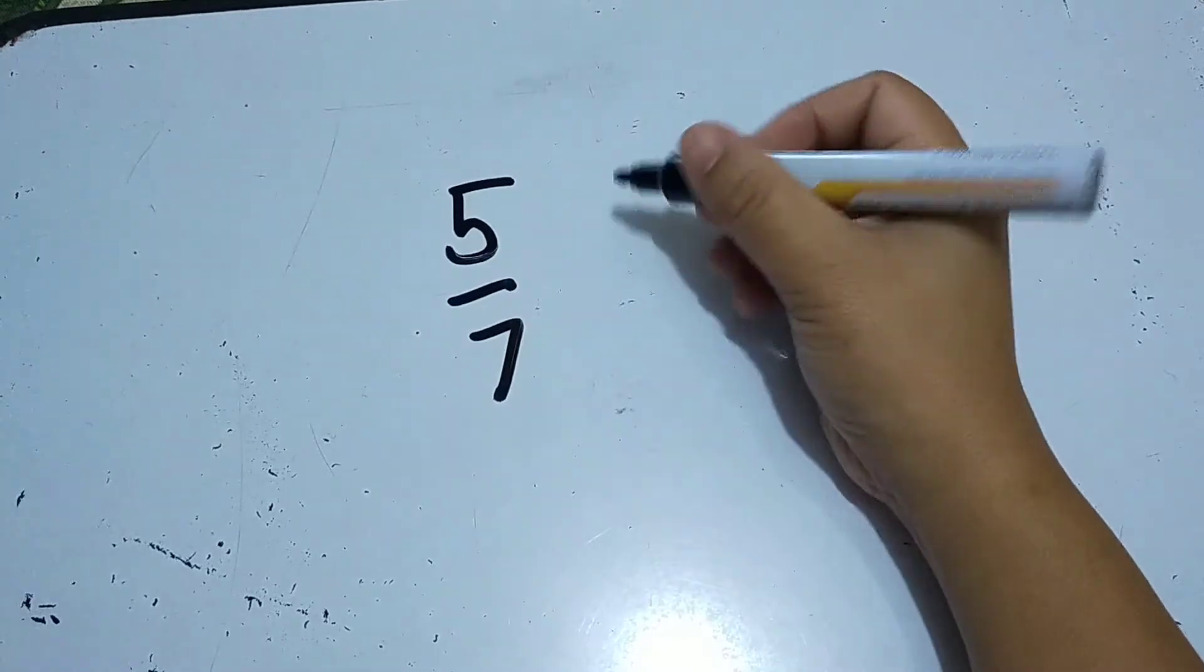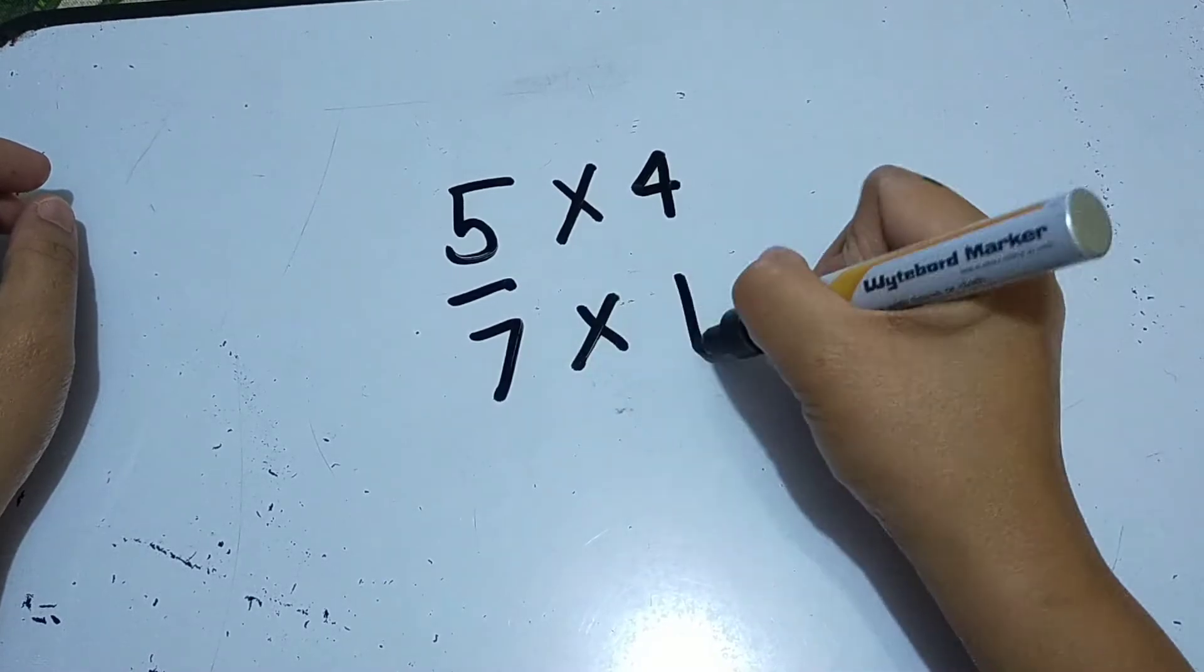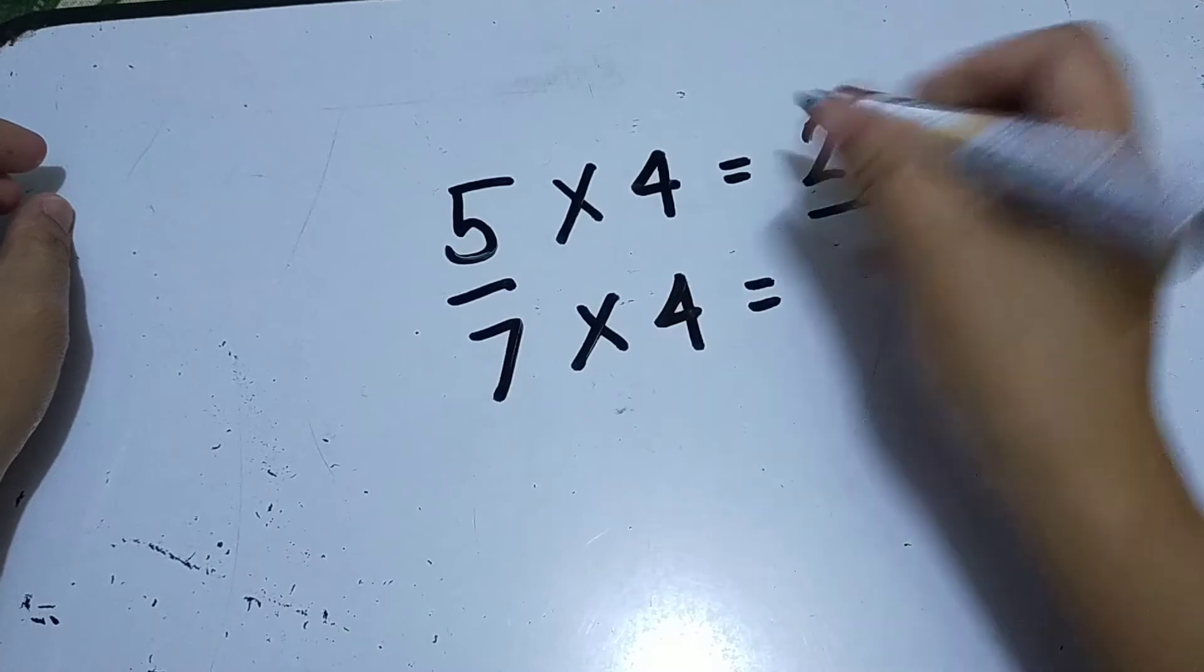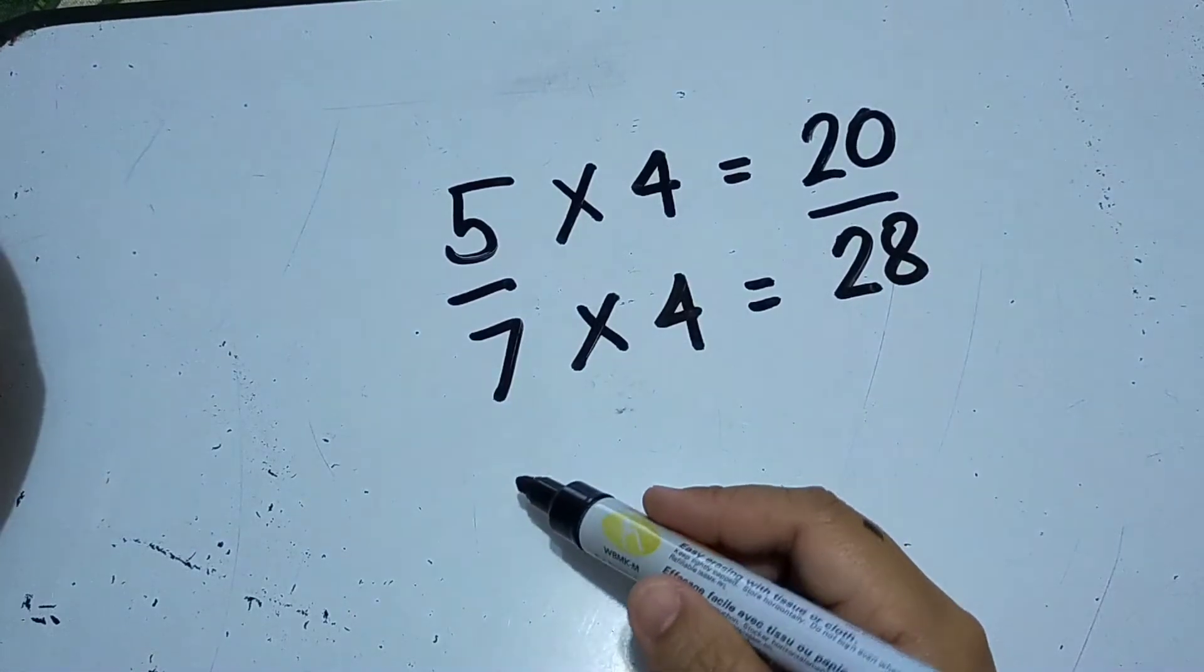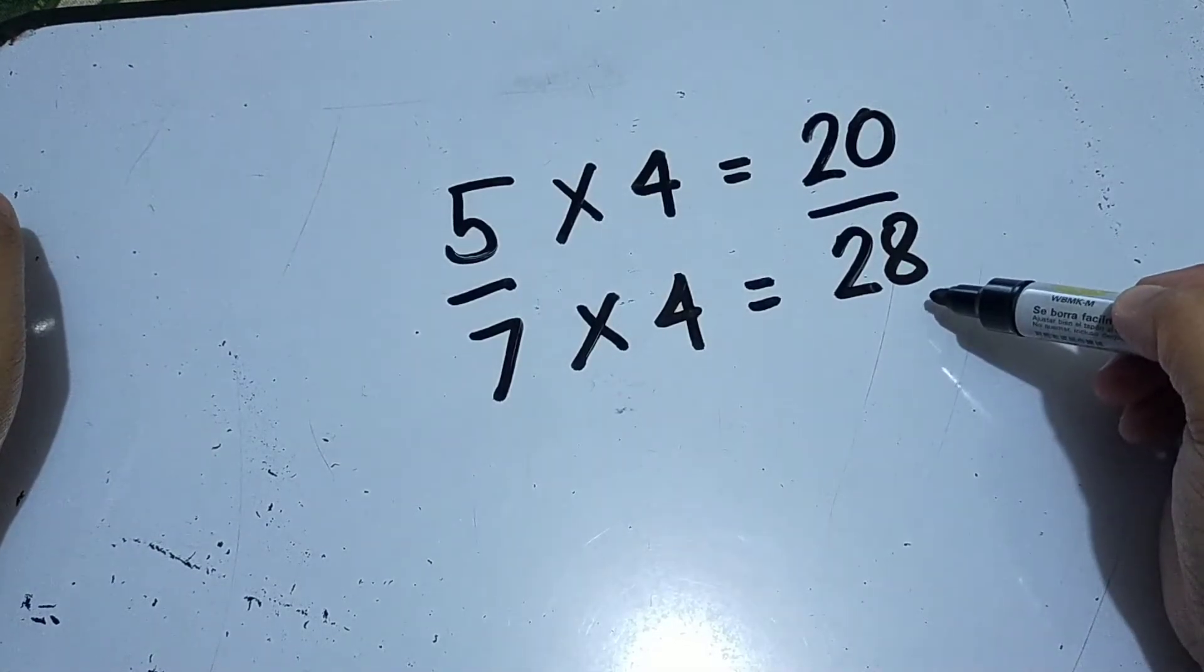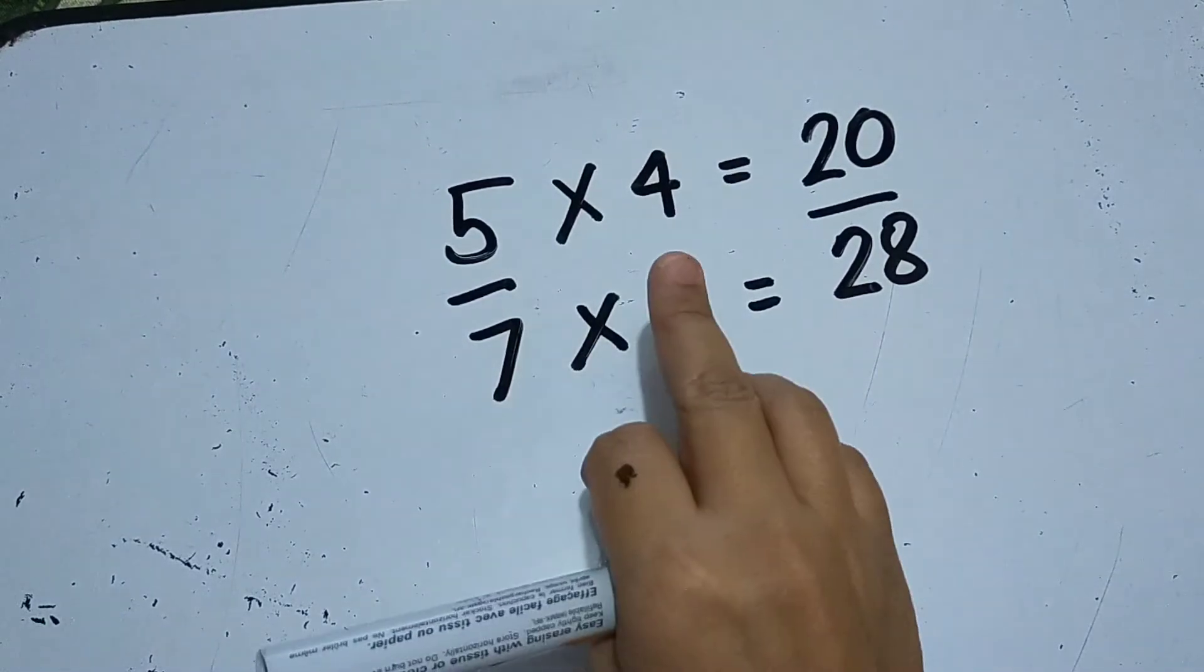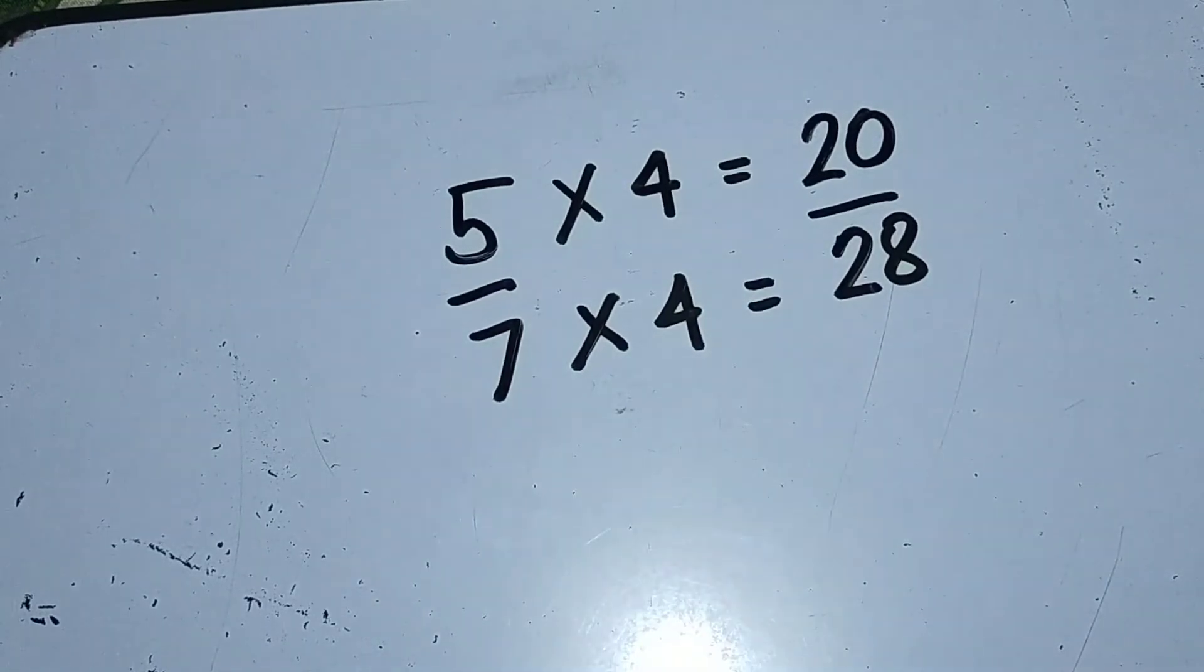5 over 7. So we can also multiply by, let's say, 4. We multiply both the numerator and denominator by 4. 5 times 4 is 20, 7 times 4 is 28. So therefore, the equivalent ratio of 5 over 7 is 20 over 28. So that means, to get the equivalent ratio, just multiply the numerator and denominator by the same non-zero number.